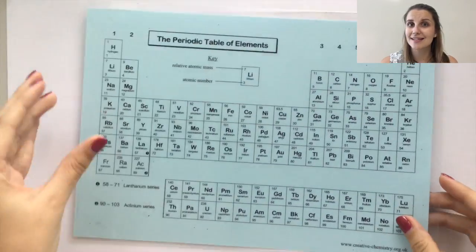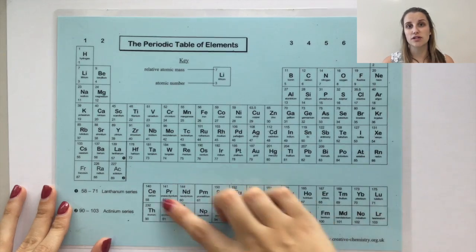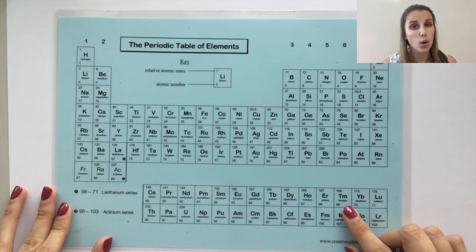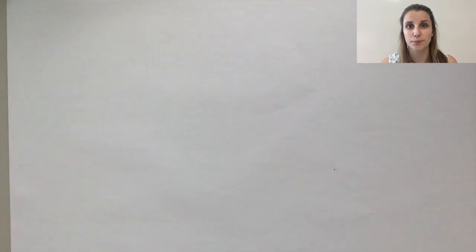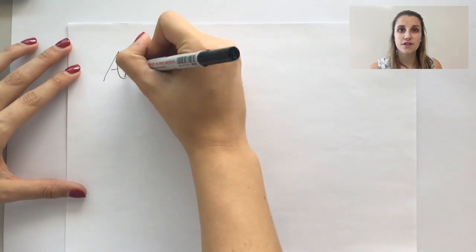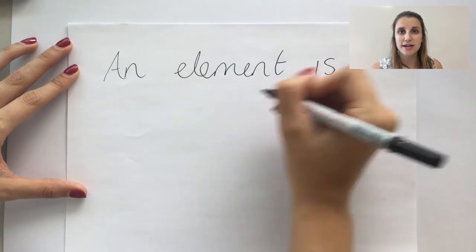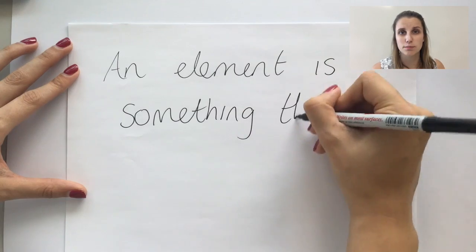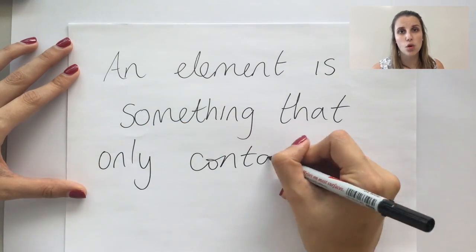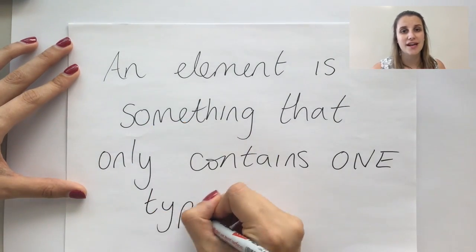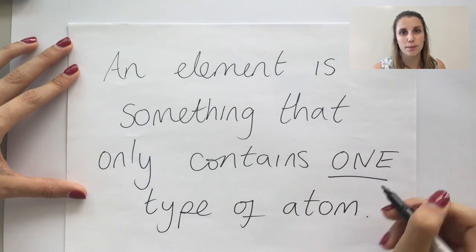Now, surprisingly, there's only actually 118 elements that have been discovered so far, and you'll find all of them on your periodic table. An element is defined as something that is only made out of one type of atom, so if it contains any more than one type of atom, then it cannot be classified as an element anymore.